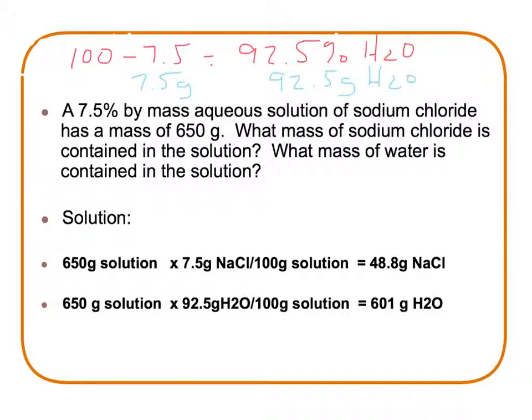Now that we have said that, we are going to take our 650 grams of solution and multiply it times 7.5 grams over 100 grams solution, and we would have 48.8 grams being sodium chloride. Likewise, we will take our 650 grams of solution times our 92.5 grams of water over 100 grams of solution, and we would have that 601 grams would be water.